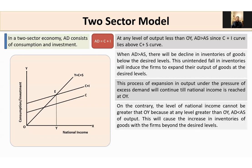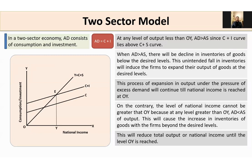On the contrary, at any level greater than OY, aggregate demand is less than aggregate supply. This will cause an increase in inventories of goods with firms beyond the desired level. This will reduce total output and national income until the level OY is reached. In this way, the market mechanism automatically leads the economy towards the equilibrium position.